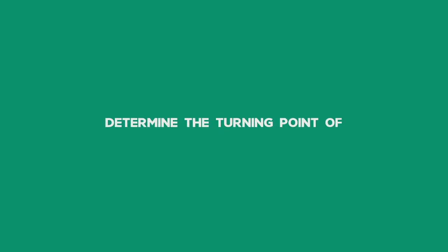Question 1: Determine the turning point of p(x) = -3x² - 6x - 1.